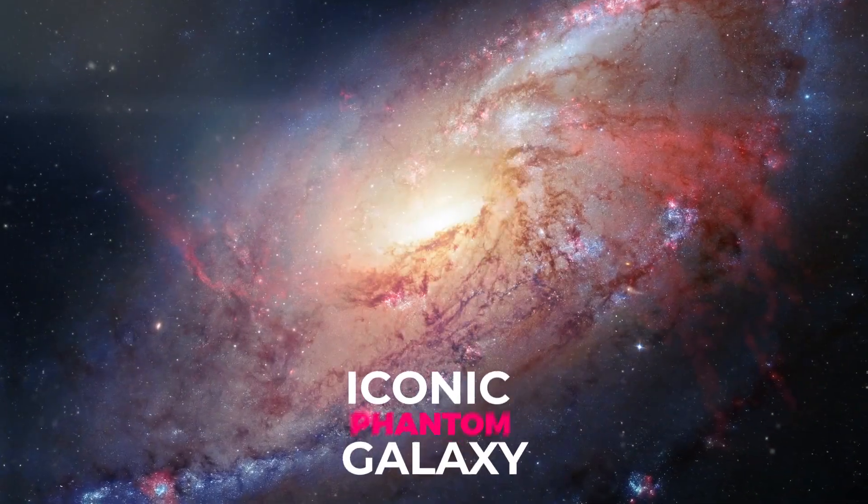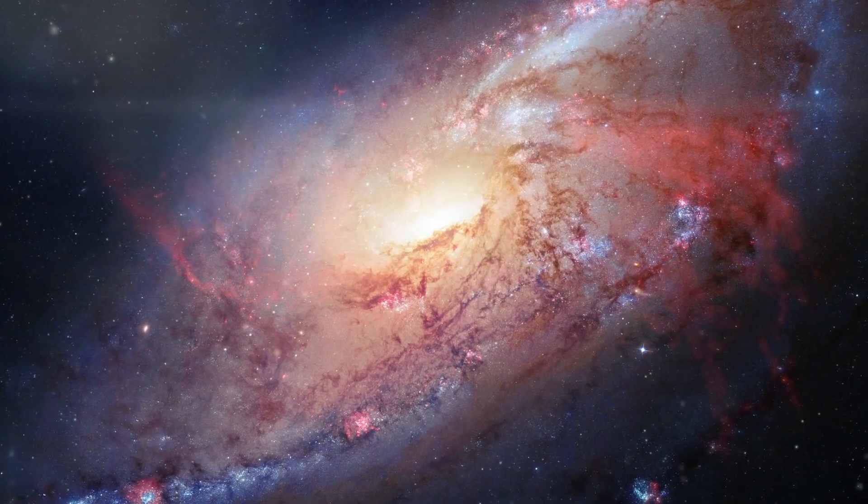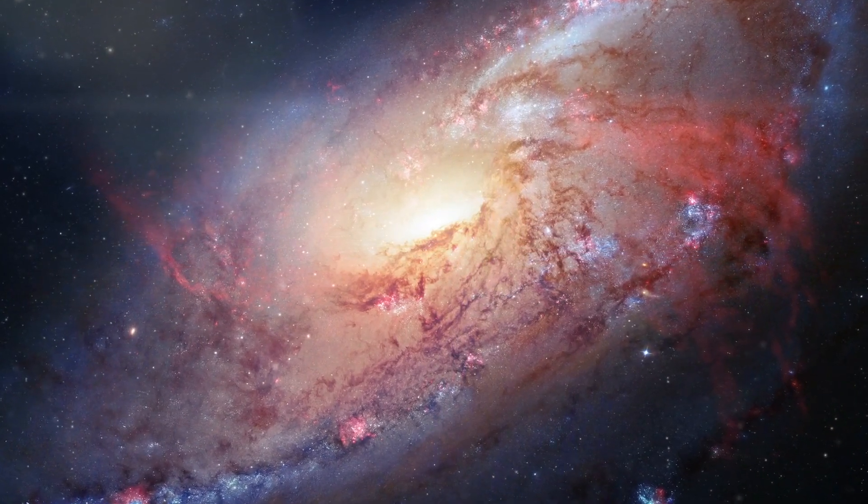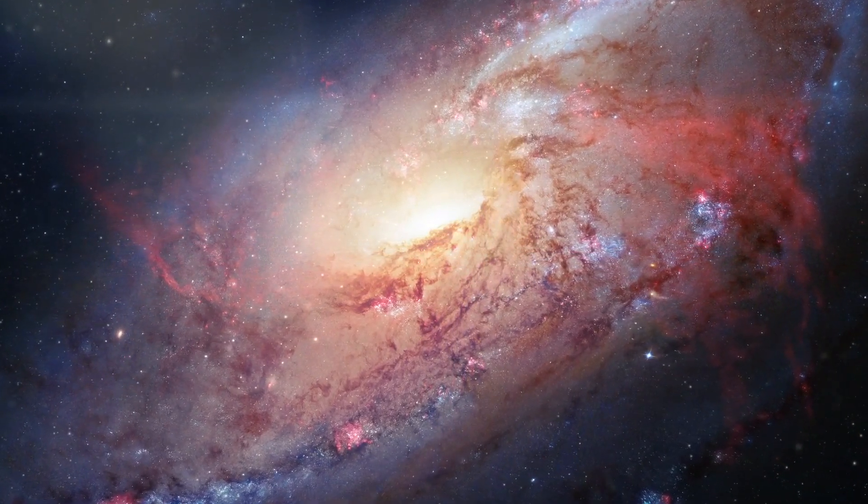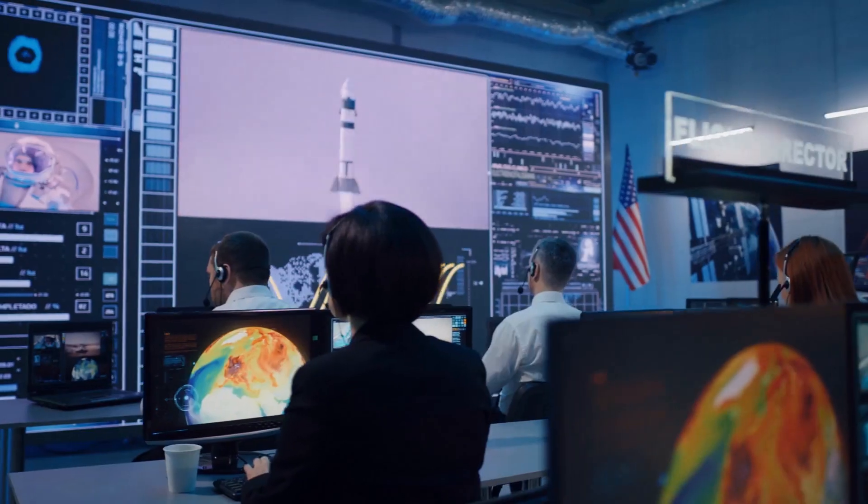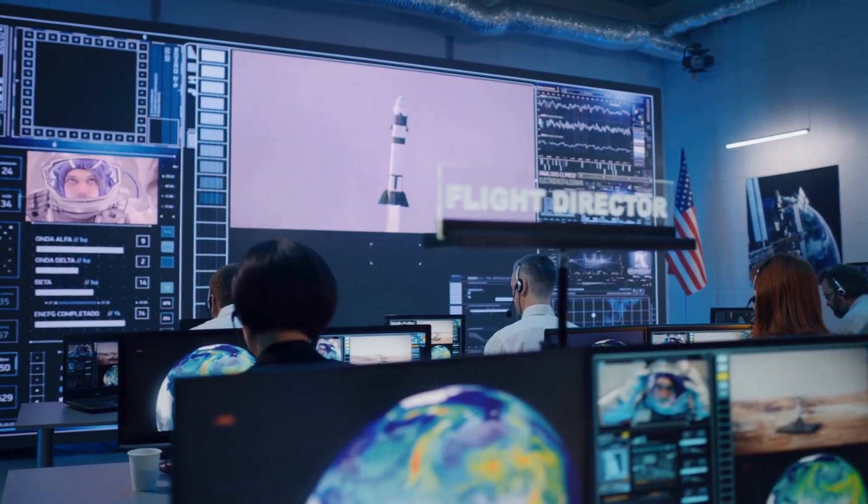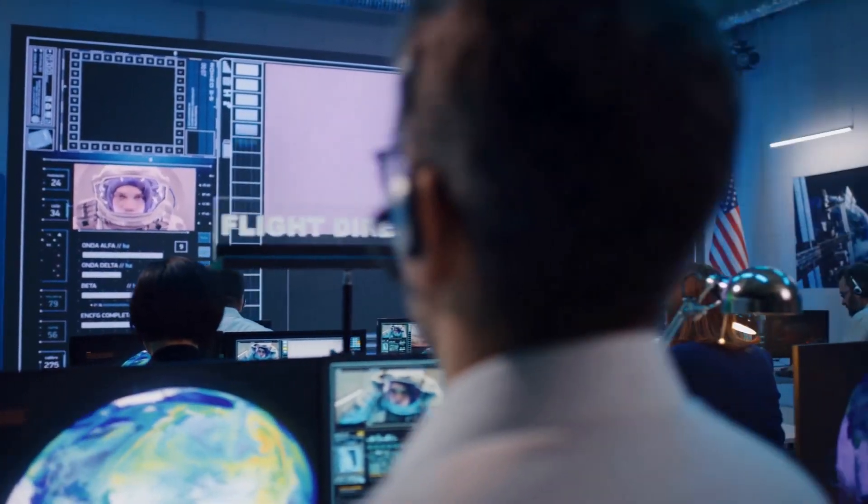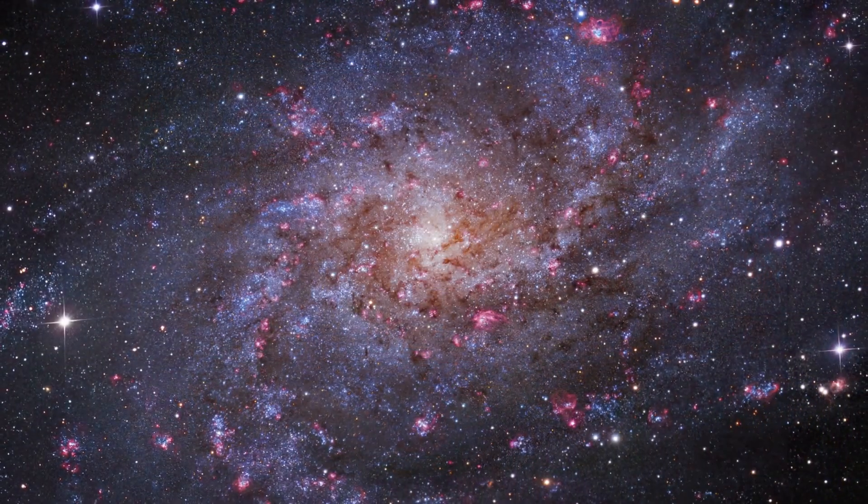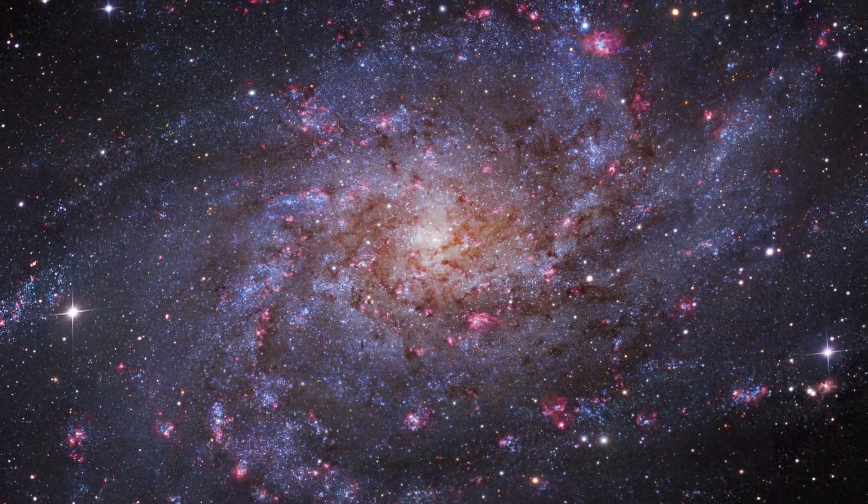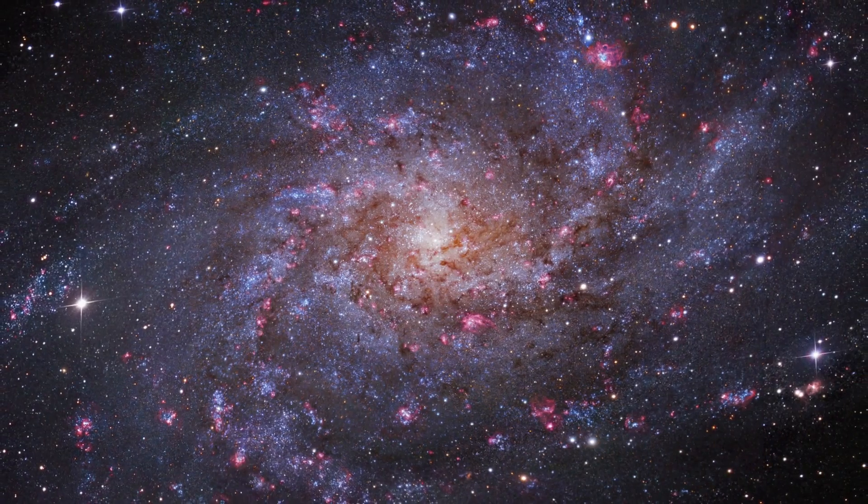Iconic Phantom Galaxy. This stunning image is of the so-called Phantom Galaxy M74. Webb's ability to pick up longer wavelengths of light allows scientists to pinpoint star-forming regions in the galaxies, such as this one. This image reveals masses of gas and dust in the galaxy's arms and a dense cluster of stars at its core.